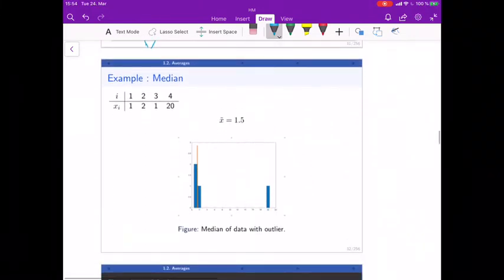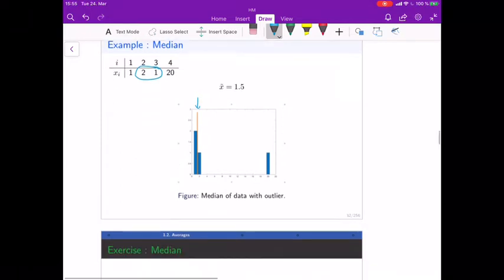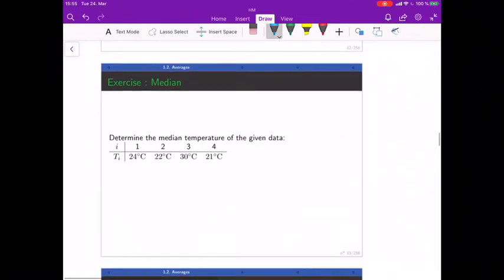median. And slightly more elaborate example like the one before, same data. If I order it, the order is one, one, two, twenty. I calculate the mean of those two: one point five. And you see the median is closer to where the most data lies. It's not influenced by the outlier 20. Try and calculate the median for this temperature sample.